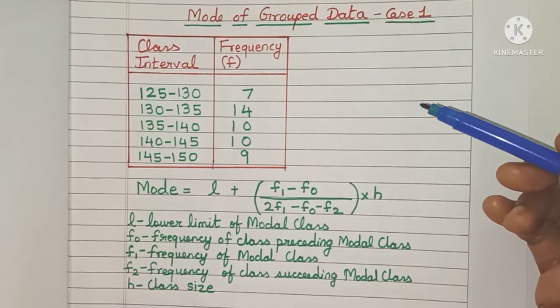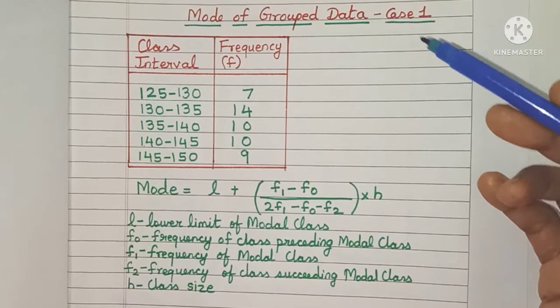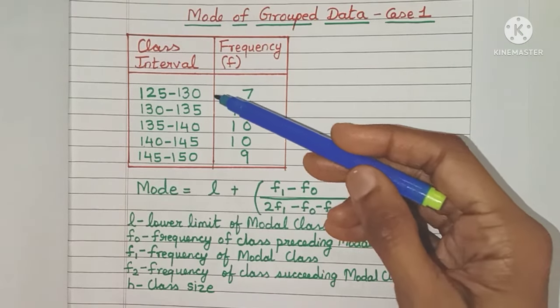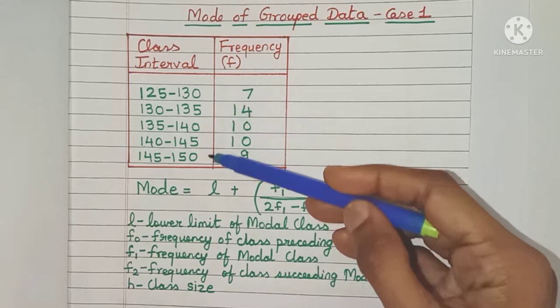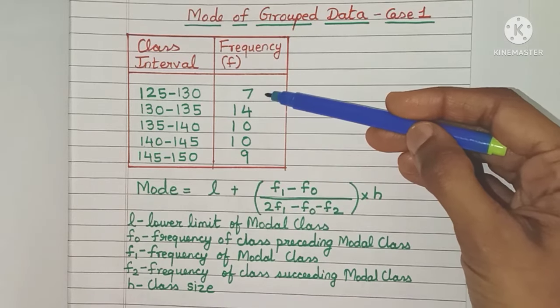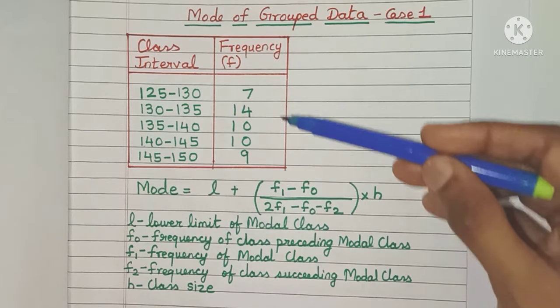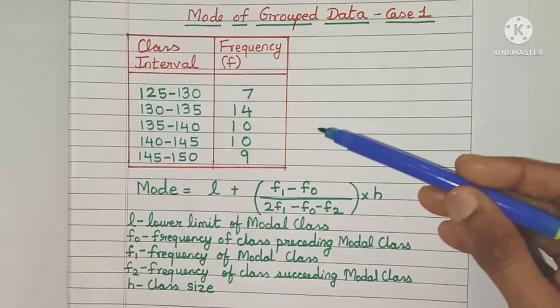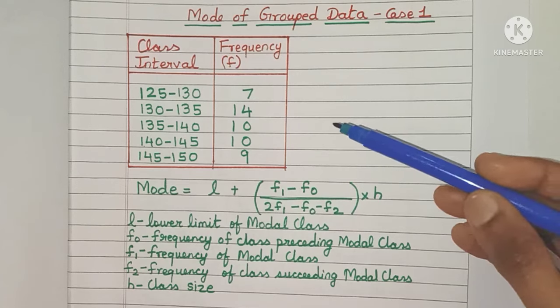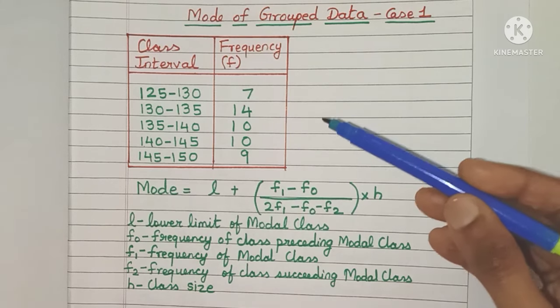Hello everyone. Today we will find the mode of grouped data. In this example, here is the class interval column and this is the frequency column. Mode is that observation which has the maximum frequency.